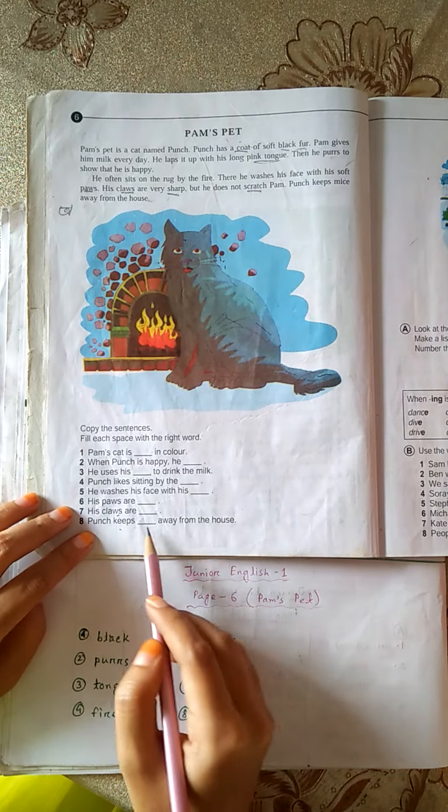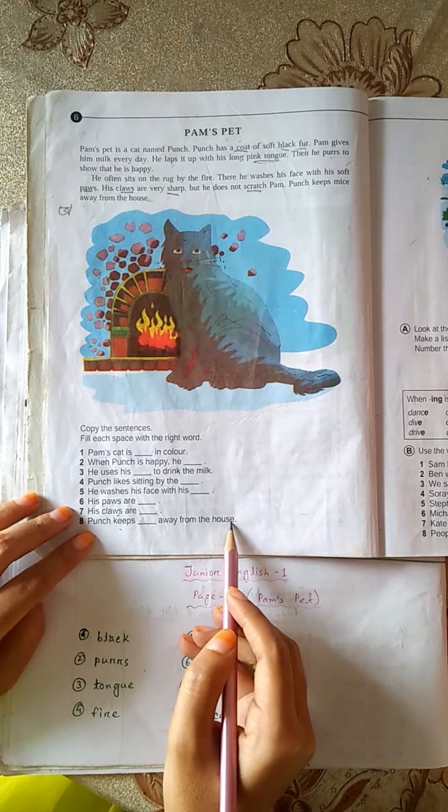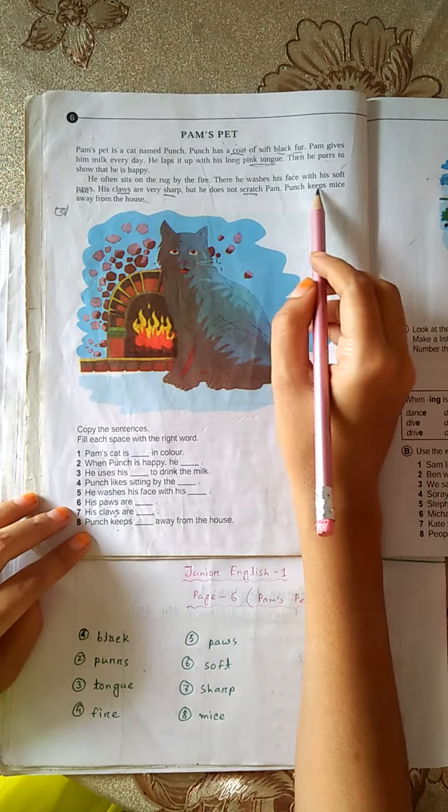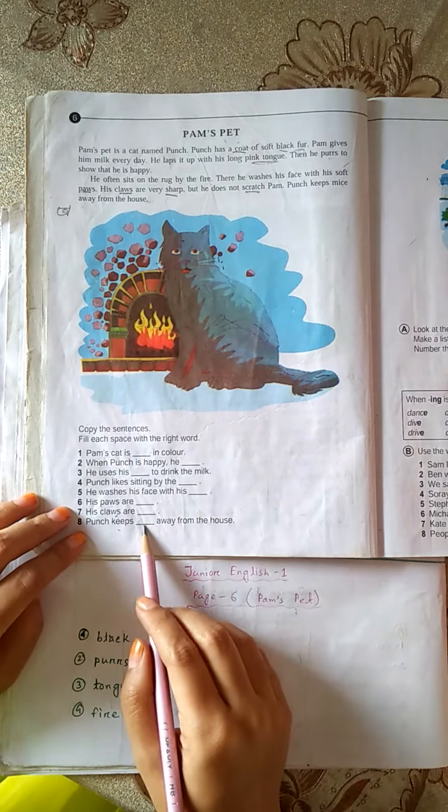8. Punch keeps dash away from the house. Mice. Punch keeps mice away from the house.